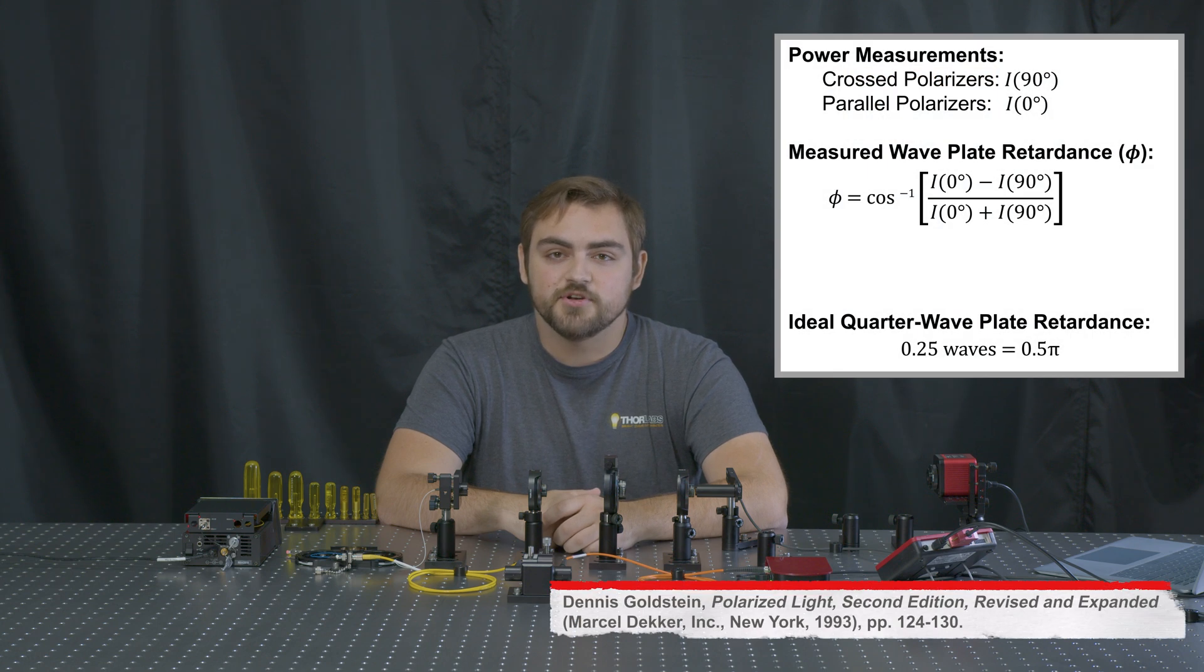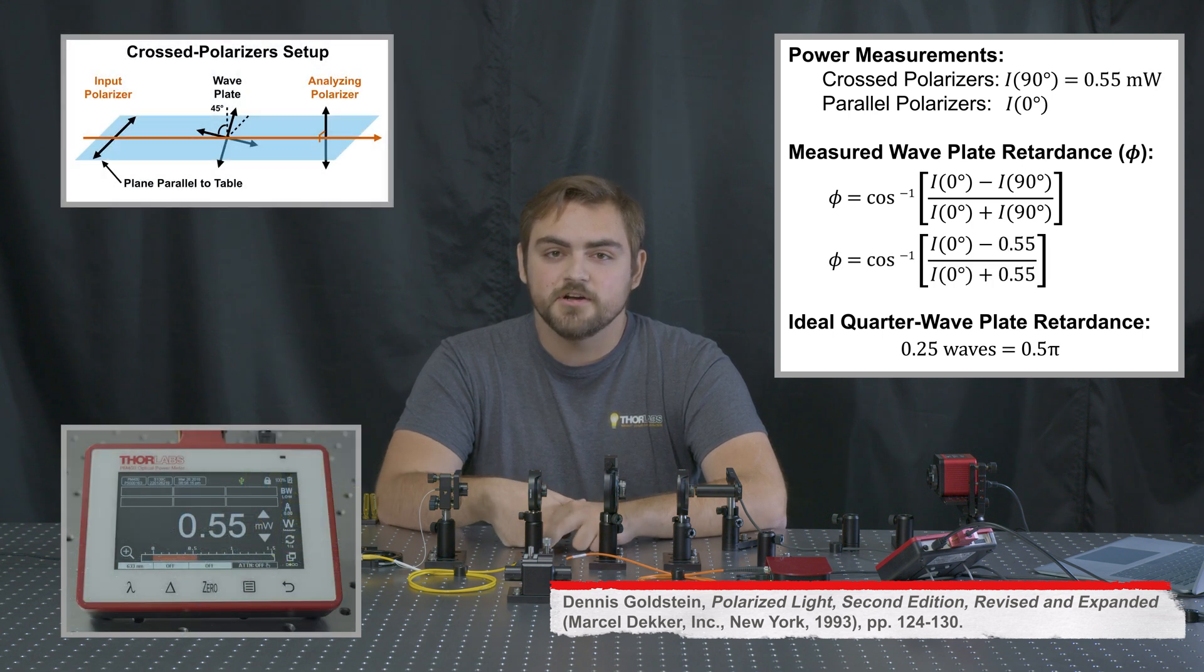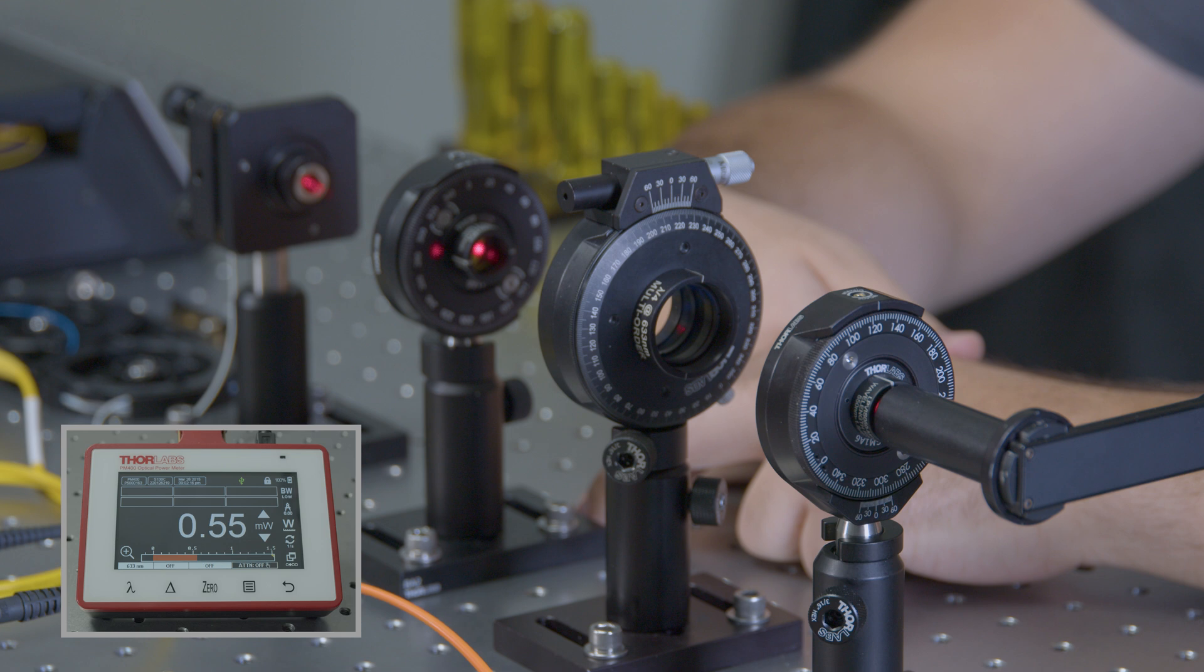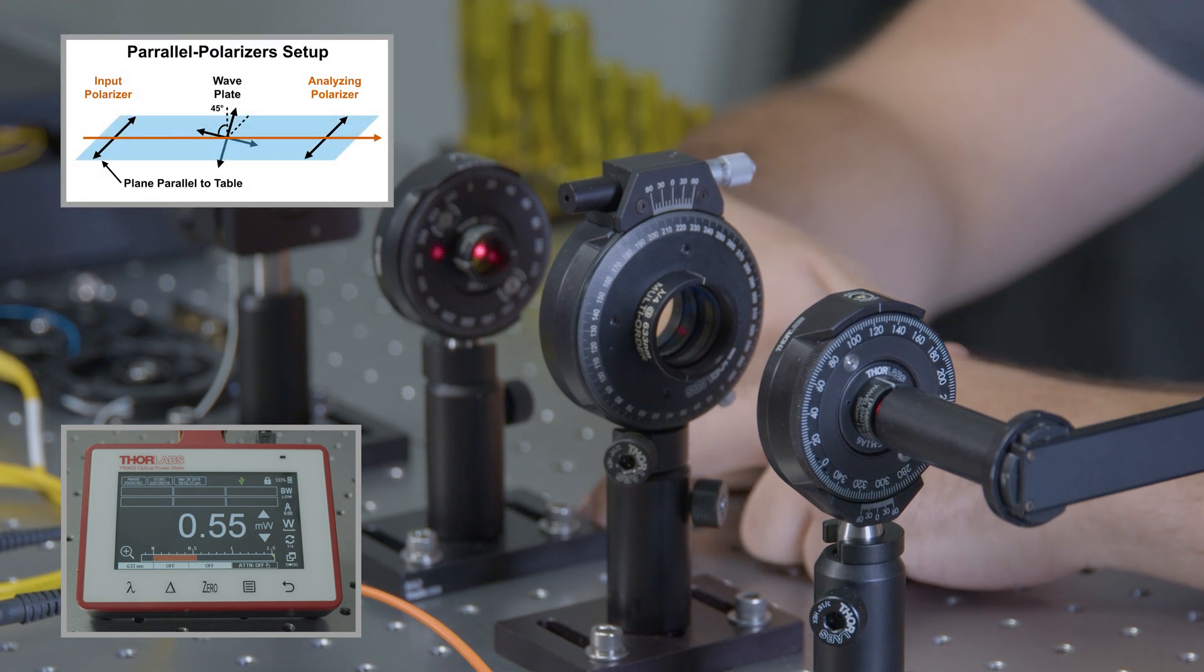In order to take the retardance measurement, we'll need two power measurements: one when the polarizers are crossed, and one when they're parallel. They're currently crossed, so we can note down the power right here. Now, I can use the indexing mount of the analyzing polarizer to rotate it 90 degrees and take a measurement with the polarizers parallel.